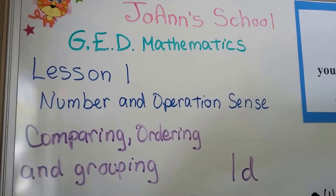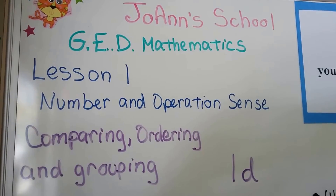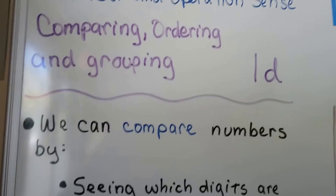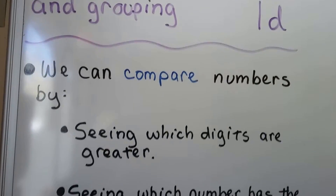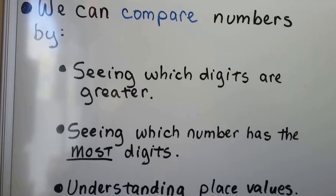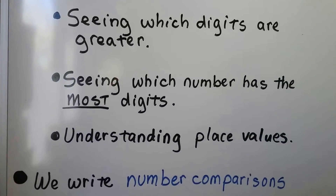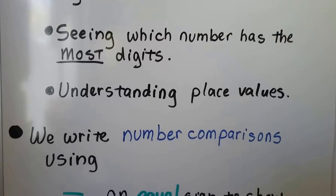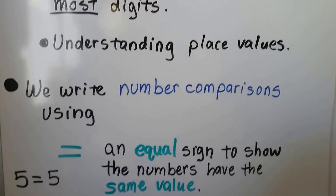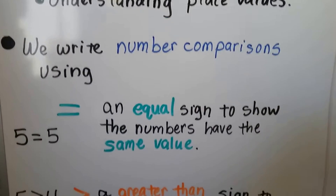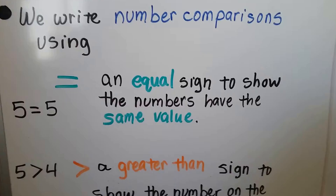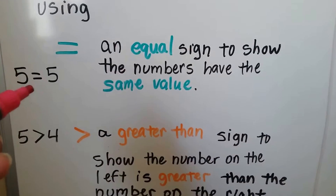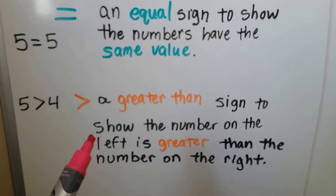We're at lesson 1D now. We're going to be comparing, ordering, and grouping. We compare numbers by seeing which digits are greater, by seeing which number has the most digits, and understanding place values. We write the number comparisons using an equal sign to show the numbers have the same value, like 5 equals 5.